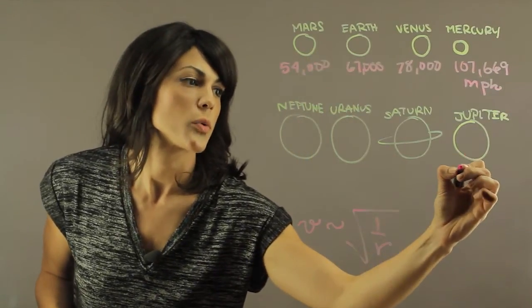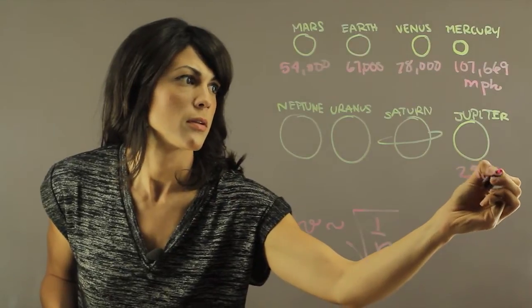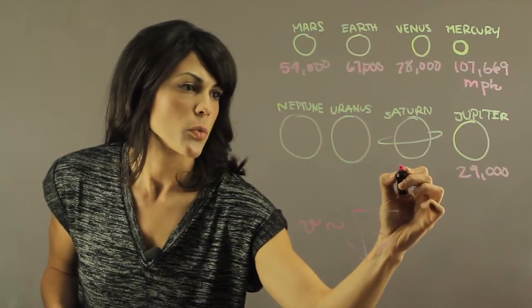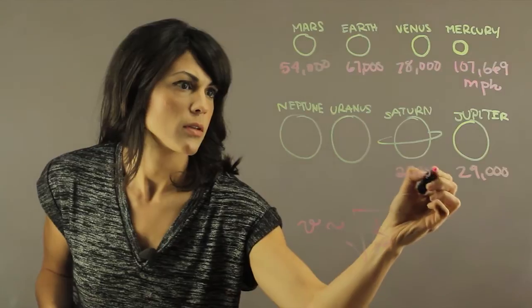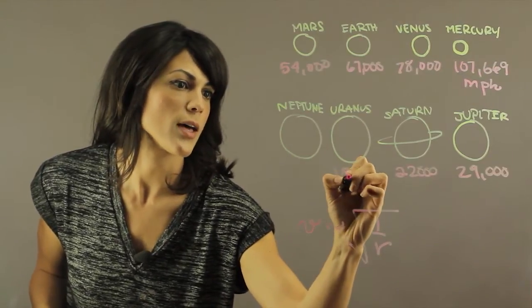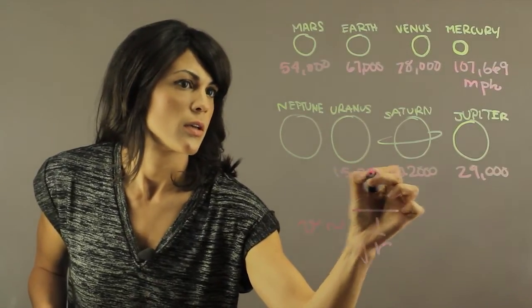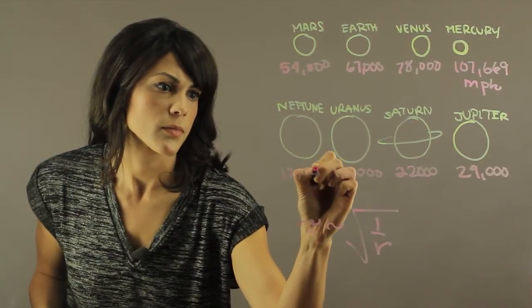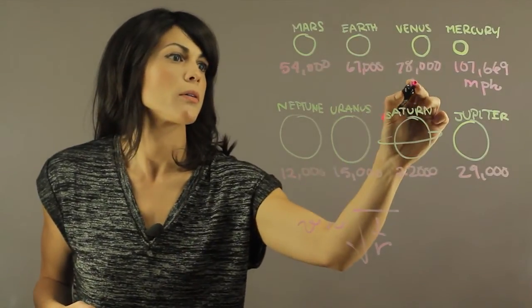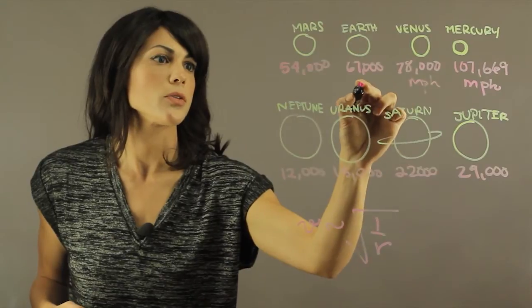Jupiter is going 29,000. Saturn is going 22,000. Uranus is going 15,000. And Neptune is going 12,000. And these are all miles per hour.